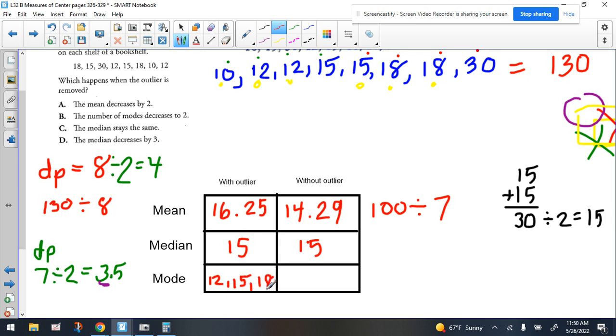Now if we took 30 out of the set, that doesn't change the fact that we have two occurrences of a 12, we have two occurrences of a 15, and two occurrences of an 18. So that would still be the mode if we took the outlier of 30 out.